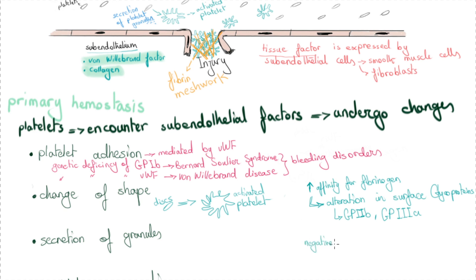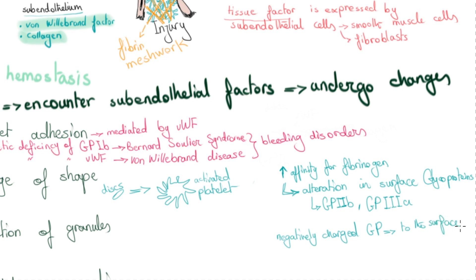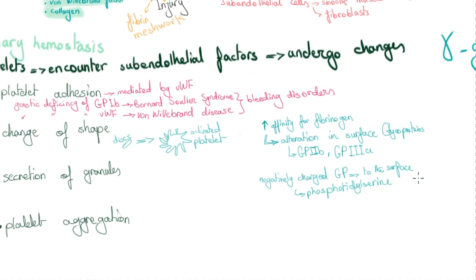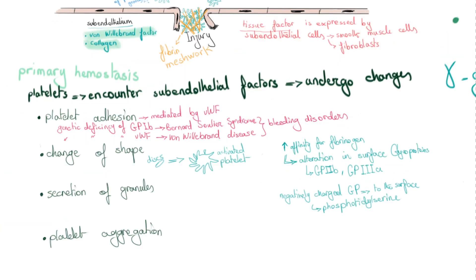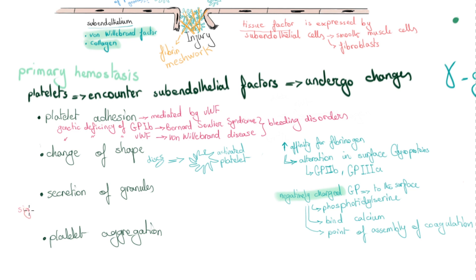Another change platelets undergo is translocation of negatively charged phospholipids — particularly phosphatidylserine — to their surface. Platelets provide a platform for the coagulation cascade to occur, and the coagulation cascade requires a negatively charged surface. These negatively charged phospholipids bind calcium, providing a nucleation point for the assembly of coagulation cascade proteins.